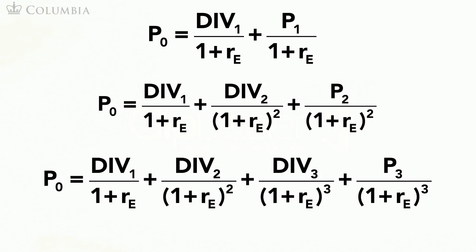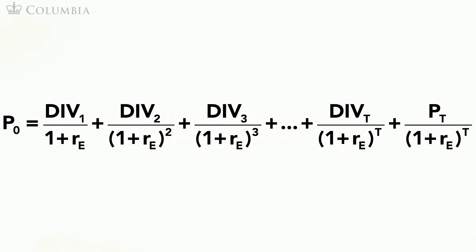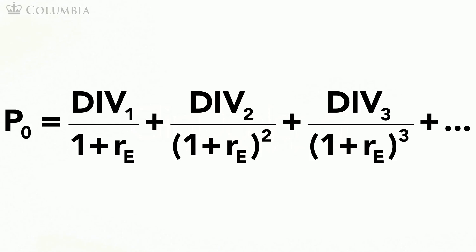If we keep going for T periods, we will find that the price of the stock today is given by this formula. If T is very large, or infinity, the last term would be essentially zero, and the expression for the price of the stock would be this one. In other words, the stock price is the present value of all future dividends.